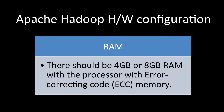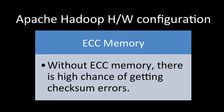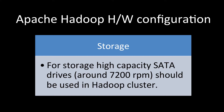For memory, 4 GB, 8 GB, or 16 GB RAM is generally good. The RAM should be paired with the processor and should use error correcting code (ECC) memory. We are looking for commodity hardware, so 64 GB RAM is not necessary. However, ECC memory is important — without it, there is a high chance of getting checksum errors during computation.